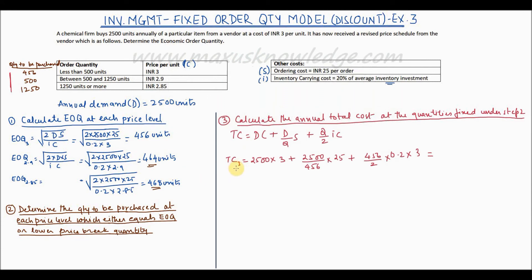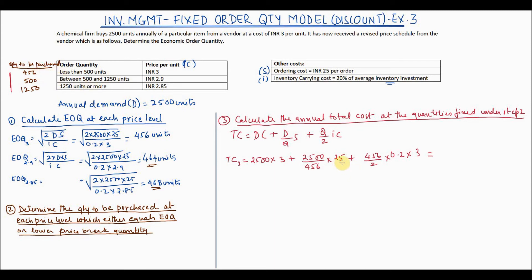At price INR 3 with quantity 456: Total cost = (2500 × 3) + (2500 / 456 × 25) + (456 / 2 × 0.2 × 3). This comes out to INR 7774.